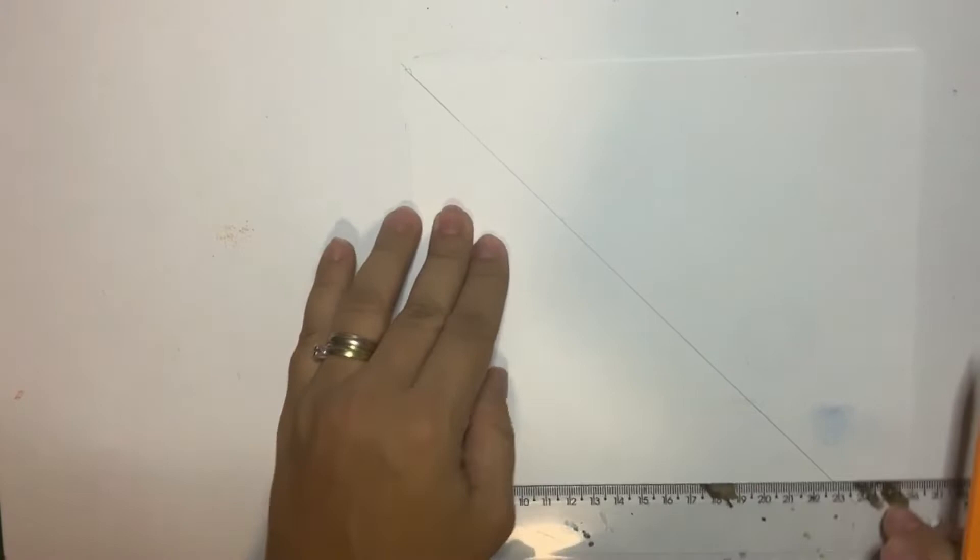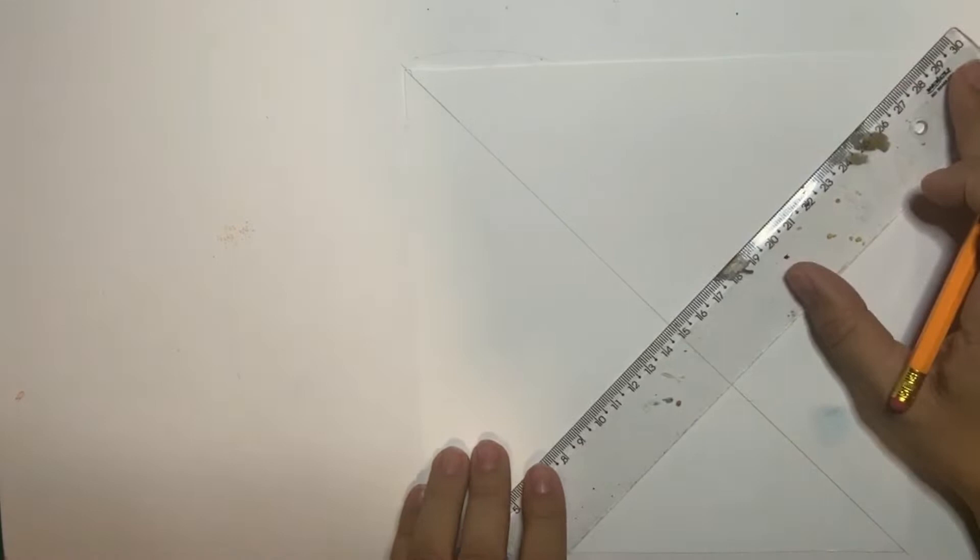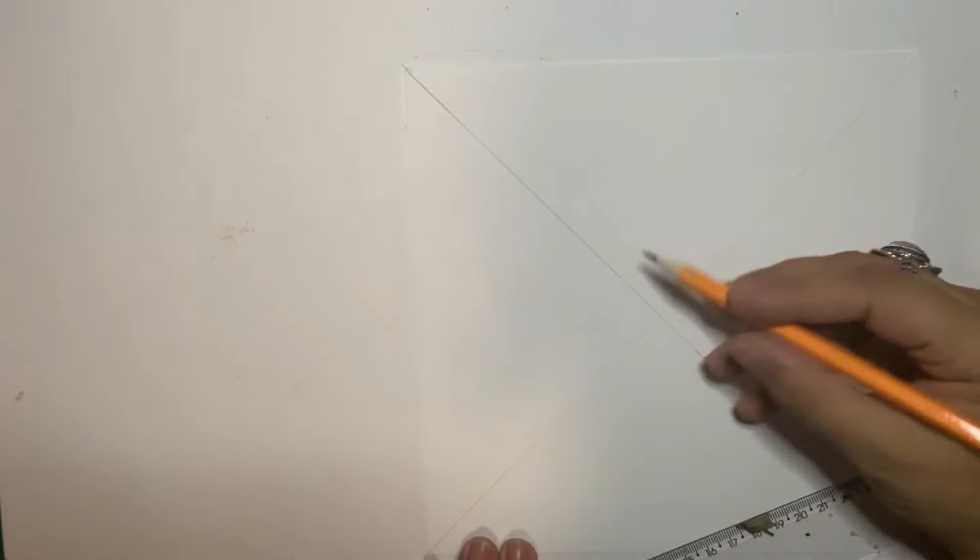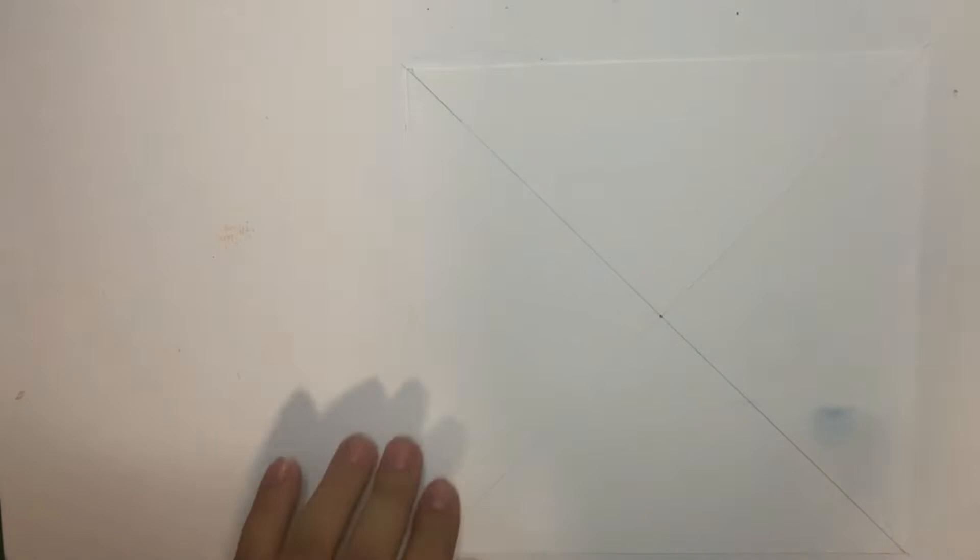And we just draw a line, it doesn't have to be hard, just a gentle line. Then we do that in the opposite corners, from the upper right corner to the bottom left corner. And then we have just got the center of the paper.